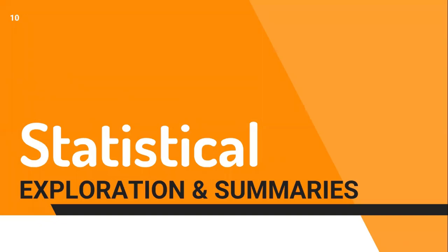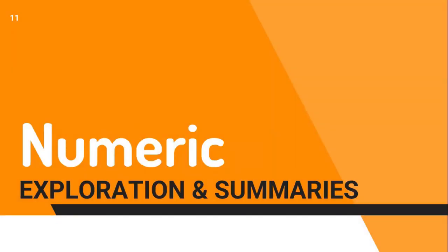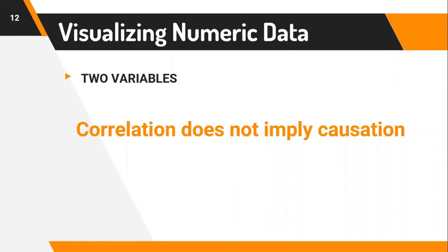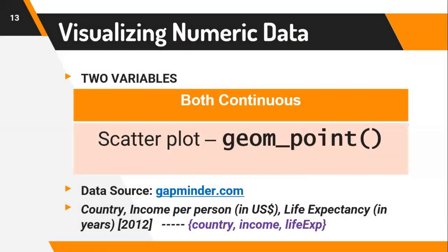We are going to look at statistical exploration and summaries, starting with exploring numeric variables. We will revisit the phrase commonly used in economics and statistics: correlation does not imply causation. We are going to take into consideration two variables — both numeric and continuous — to explore their relationship. If you want to look at the relationship between two continuous variables, you would likely create a scatter diagram to look at that distribution.